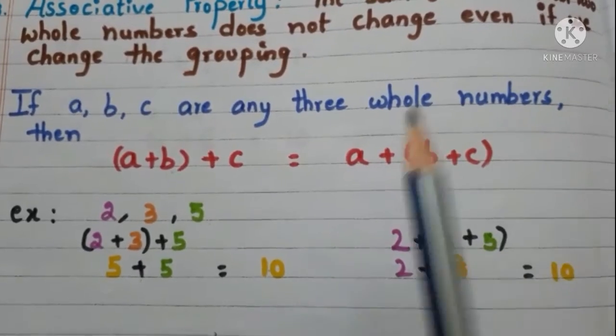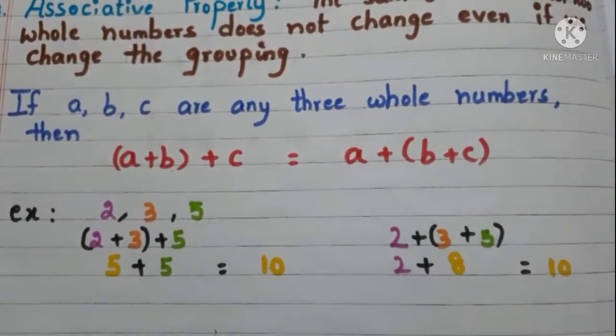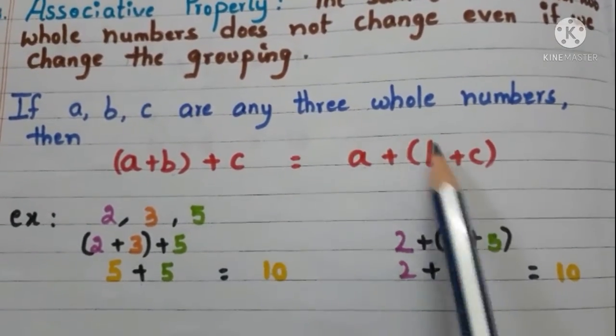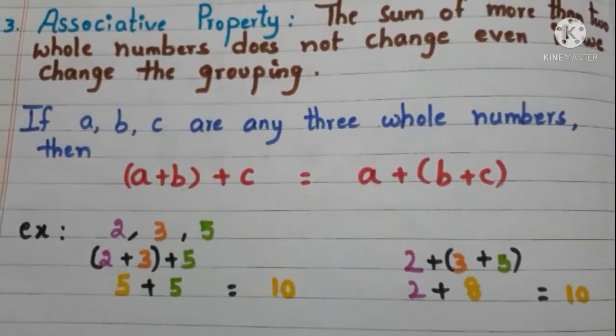First add b and c and then add a. In these two cases the sum remains same. This is associative property. Let us see with the example.